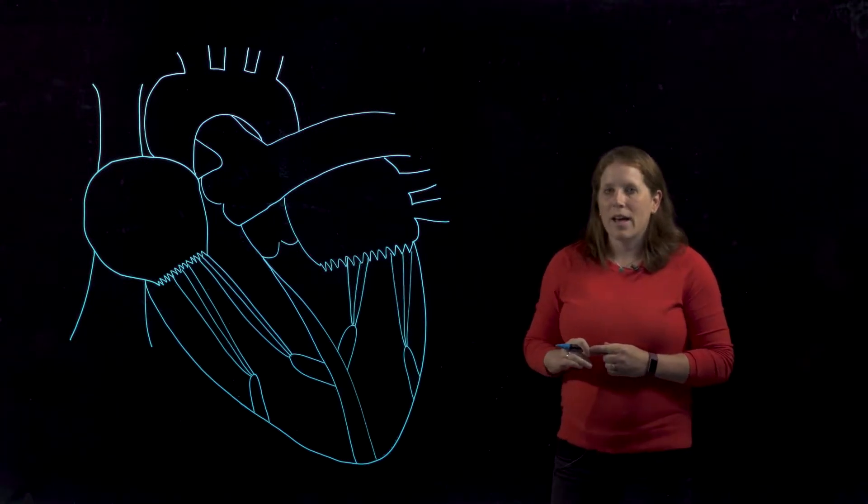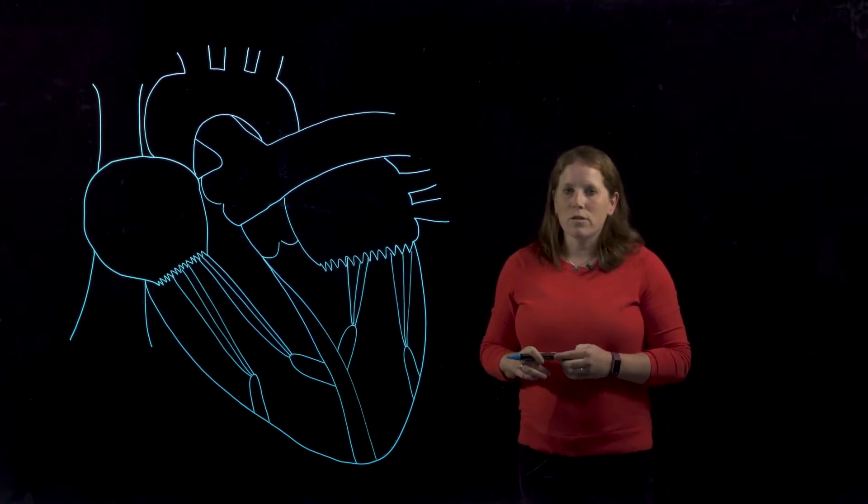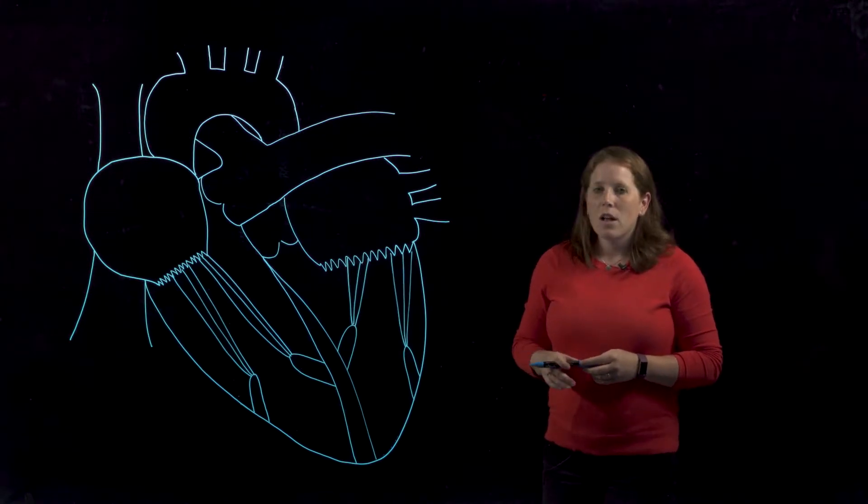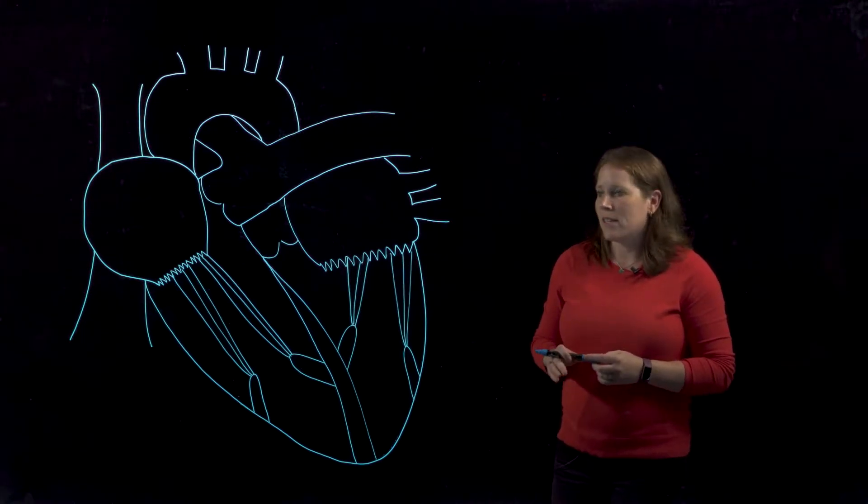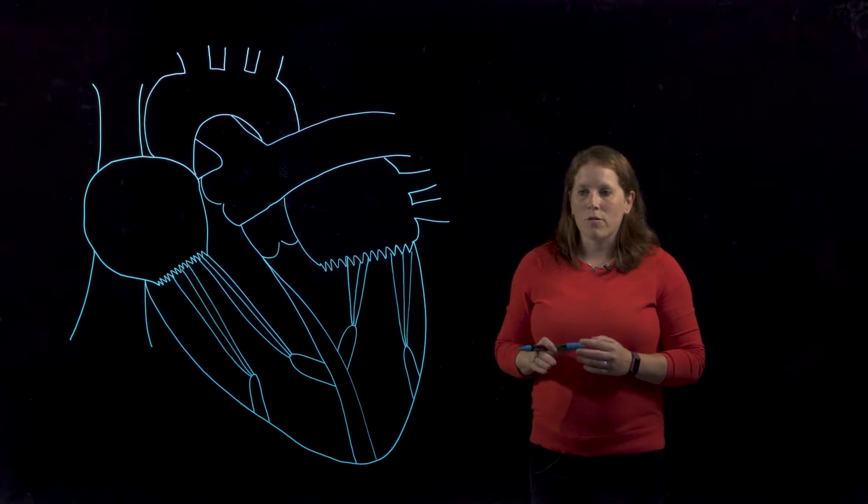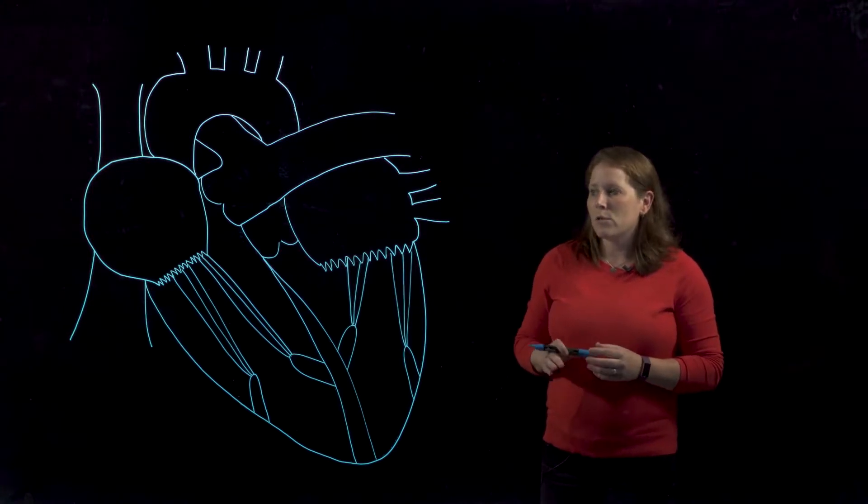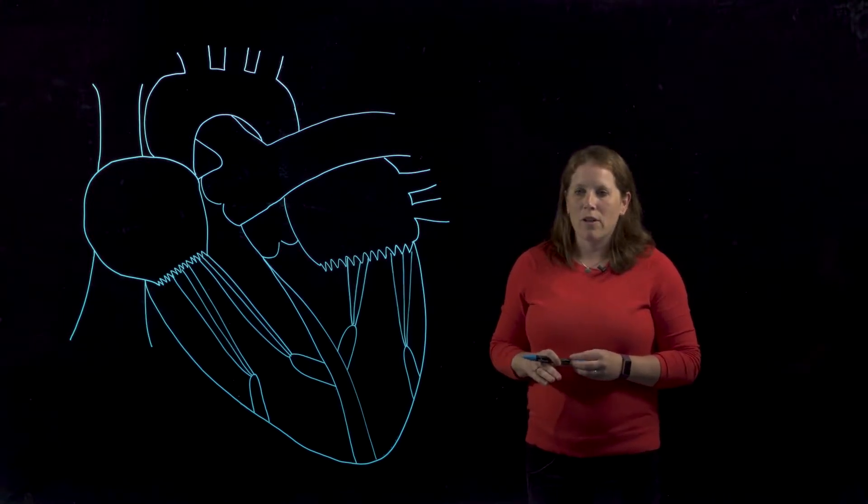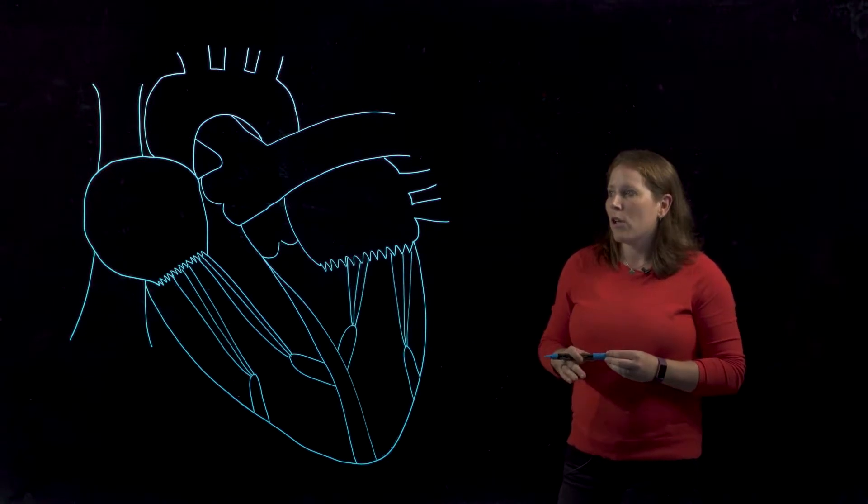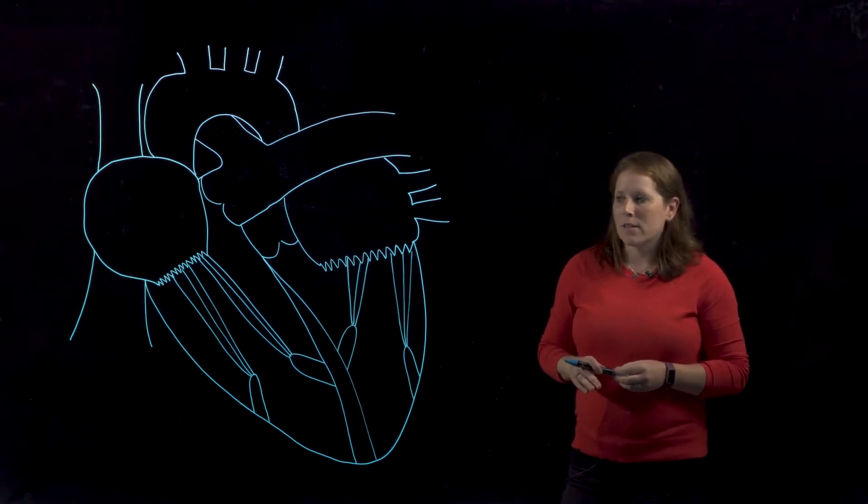In this video we're going to look at a coronal or frontal section through the heart. What this allows us to do is identify the major anatomical features of the heart and in doing so we'll also trace the pathway of blood as it travels through the heart out to the lungs and back.